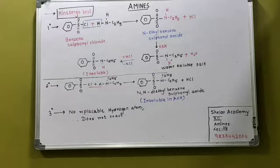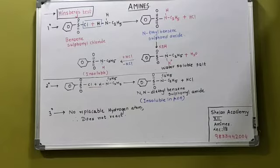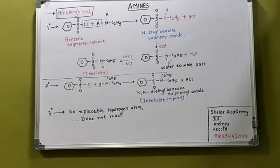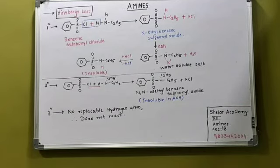This benzene sulfonyl group, this sulfonyl group, that is a very strong electron withdrawing group. The hydrogen attached to it, so it makes it very strongly acidic in nature because it has got a very strong electron withdrawing sulfonyl group.